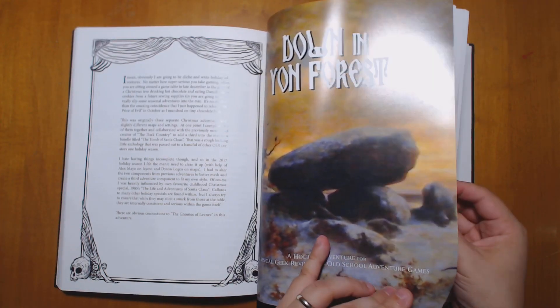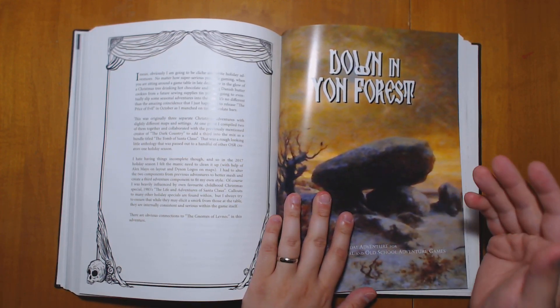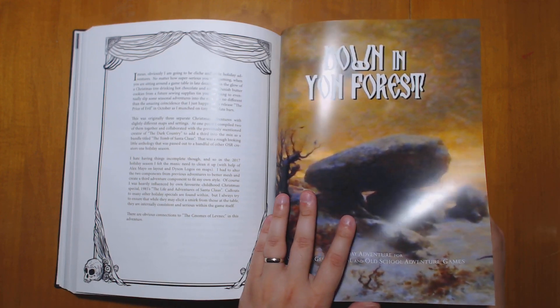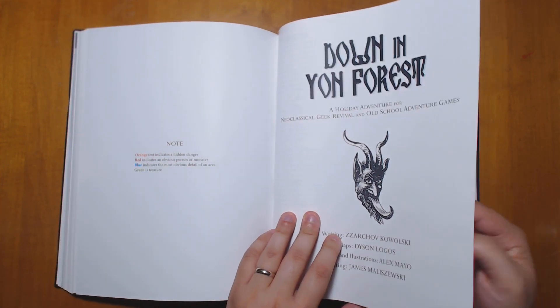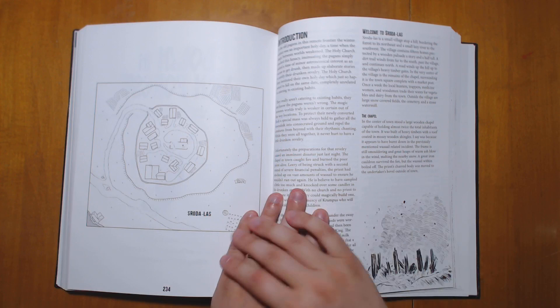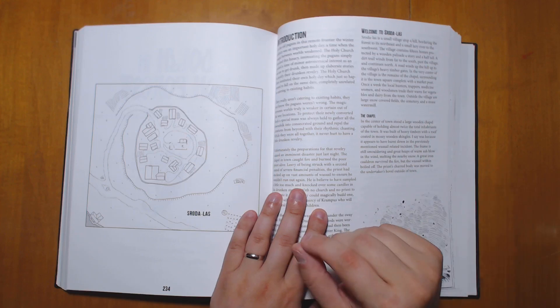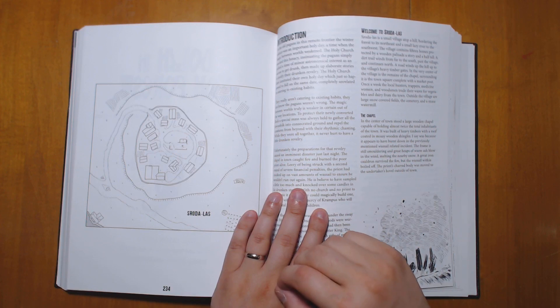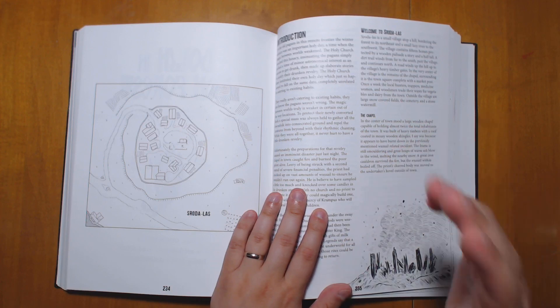Down in Yon Forest is I believe the last one and this is a Christmas adventure which is great because there is not nearly enough Christmas adventures out there. I'm not sure if this one is available in PDF form. I didn't see it on DriveThruRPG but perhaps it's available elsewhere and I really like this one. This is one of the adventures that I would be most looking forward to running. It reminds me of the first adventure A Thousand Dead Babies in a lot of ways in that it has a number of interesting locations. It has a town, it has a fortress and it has an underwater tomb or temple somewhere else and all of these are related to each other and there is an interesting challenge for players to deal with.